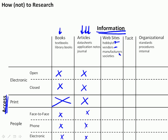Websites also come from vendors, manufacturers, and professional societies. Many websites, particularly hobbyist websites, are open, but you have to be careful because not all the information you get off open websites is accurate. Closed websites, such as from vendors and manufacturers, are much harder to get as a student. You can find out about websites through people, phone contacts, and electronic contacts. People are a very important source of accurate websites.